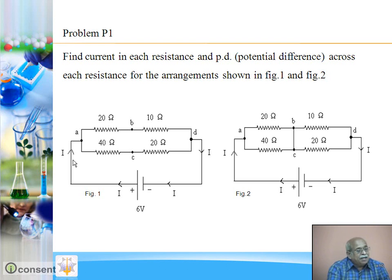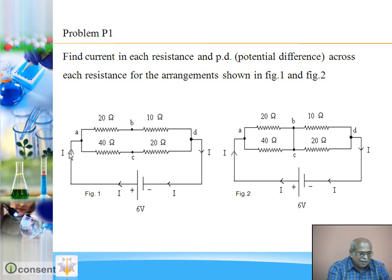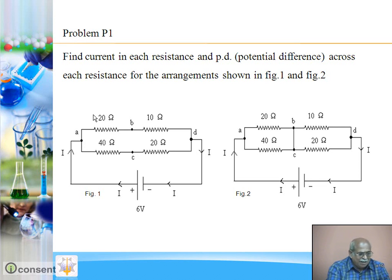First consider figure 1. In figure 1, resistances 20 and 10 are in series, so equivalent resistance from A to D will be 20 plus 10, which is 30. Similarly, 40 and 20 resistances are in series, so equivalent resistance from A to D in this branch will be 40 plus 20, which is 60. Then this 30 ohm and this 60 ohm will be in parallel.